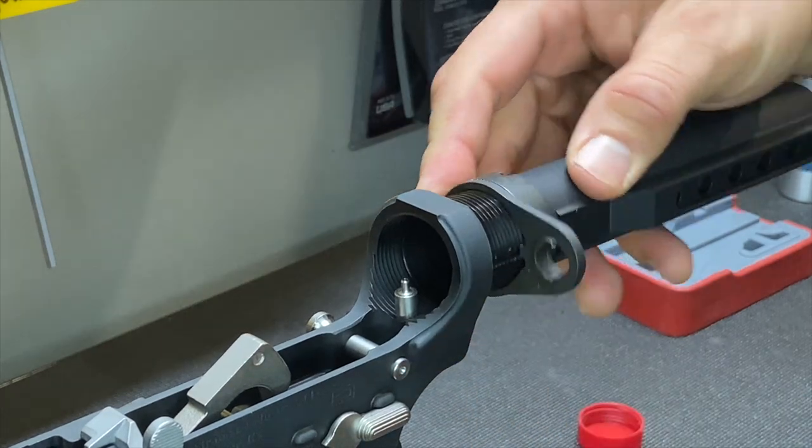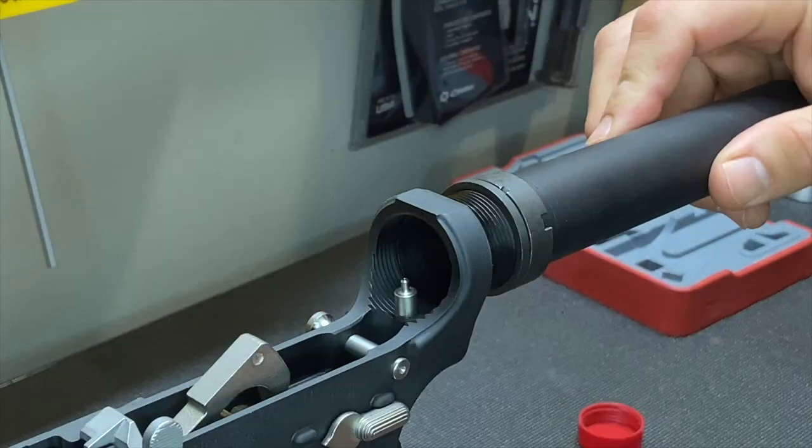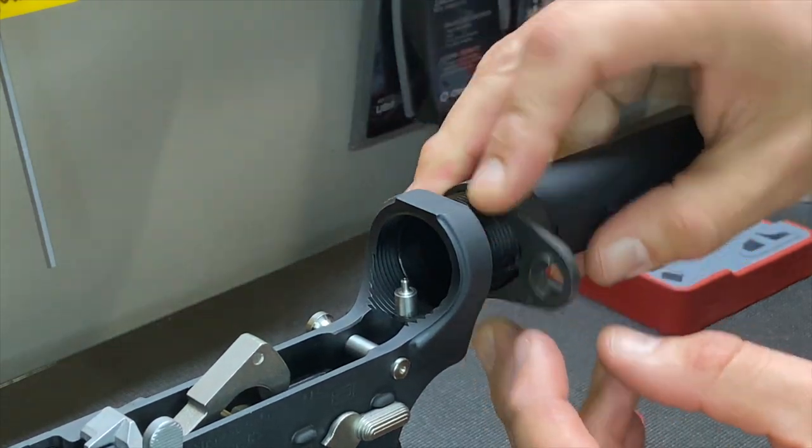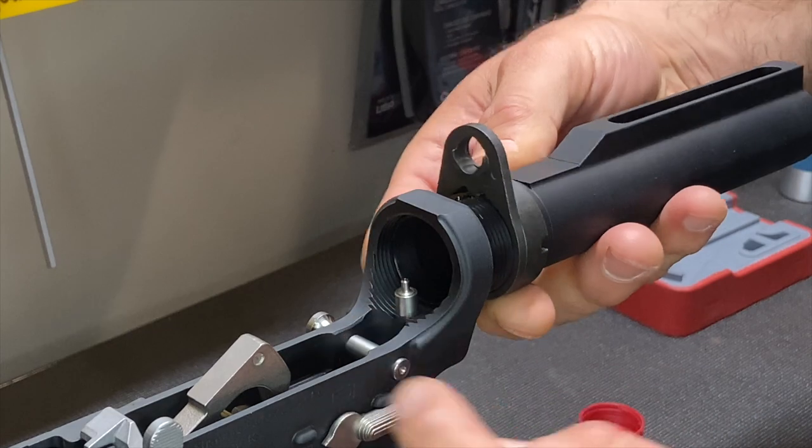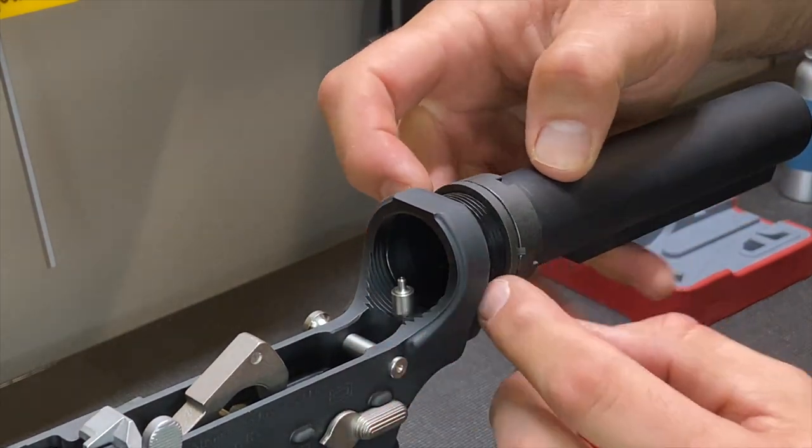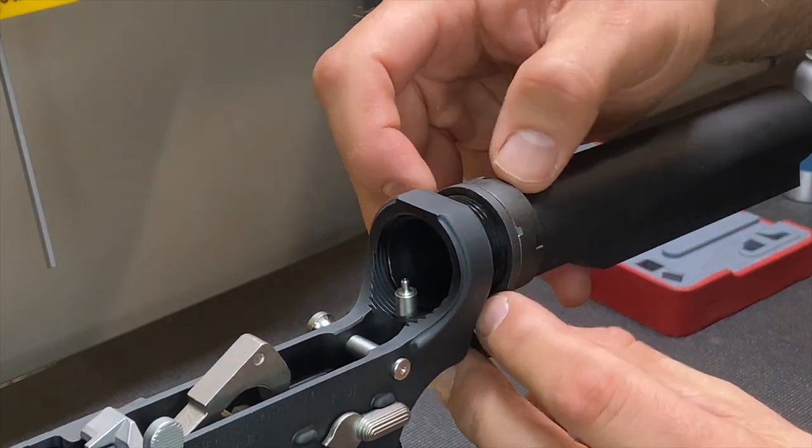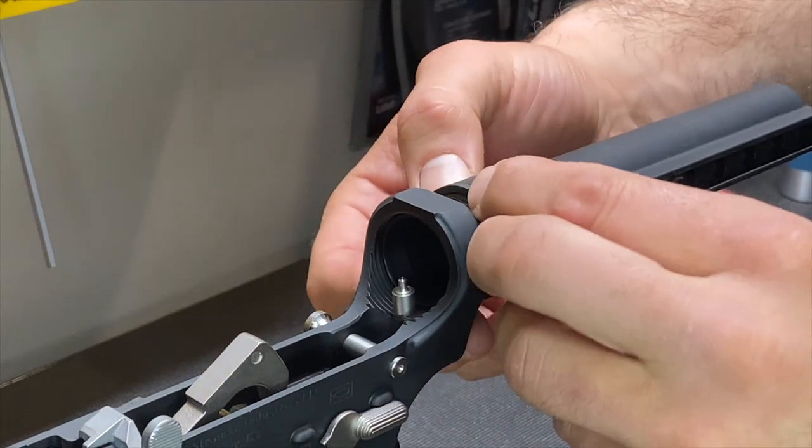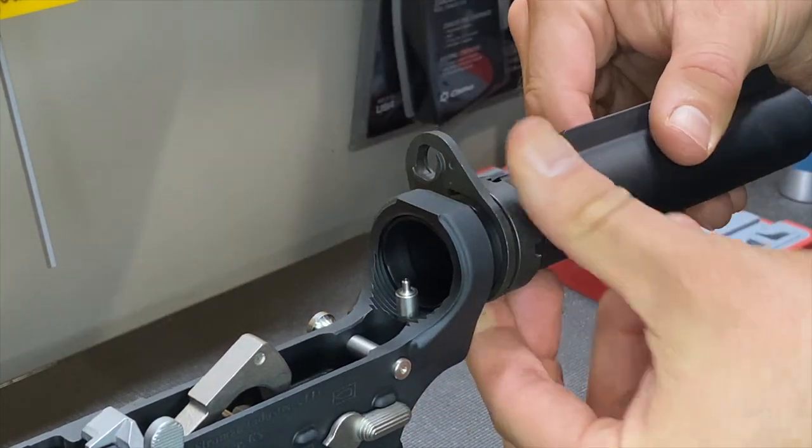Now this particular one, this end plate moves with the buffer tube, so we're going to line this up here, start screwing this on. There's a couple things to be aware of. Remember there's a spring back here poking out from our takedown pin, it's a detent spring.